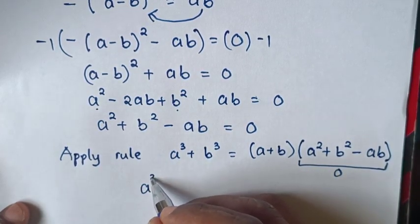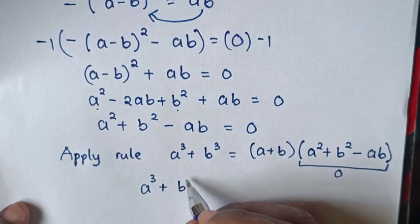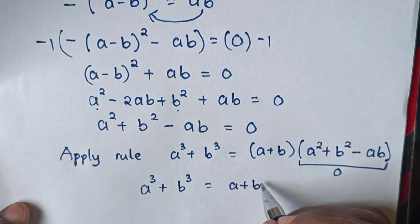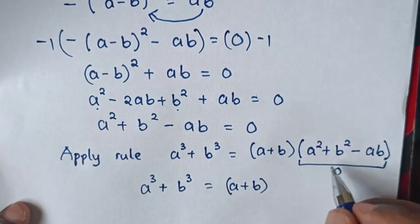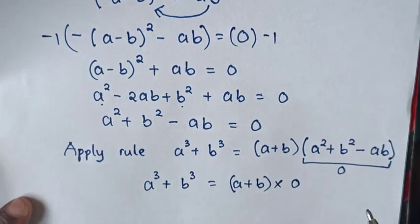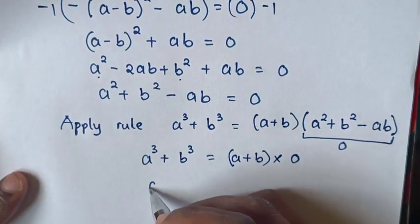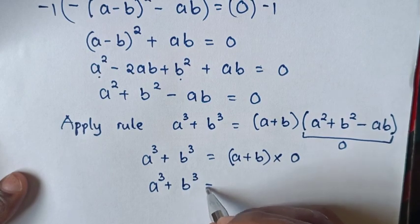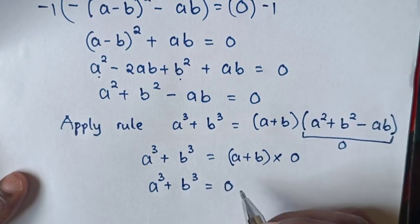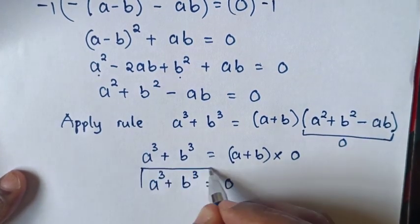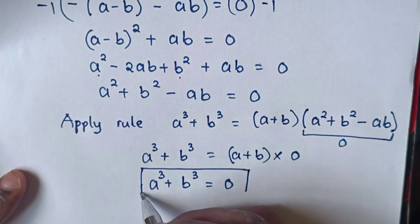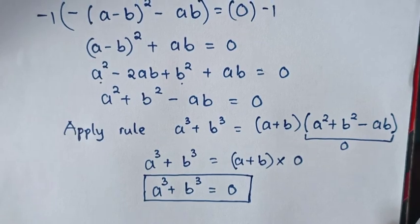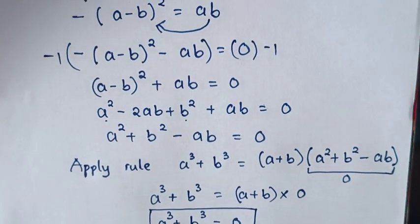Therefore, a³ plus b³ is equal to a plus b bracket times 0, which gives a³ plus b³ equals 0. That is our final answer. Don't forget to subscribe to my channel and see you in the next video.